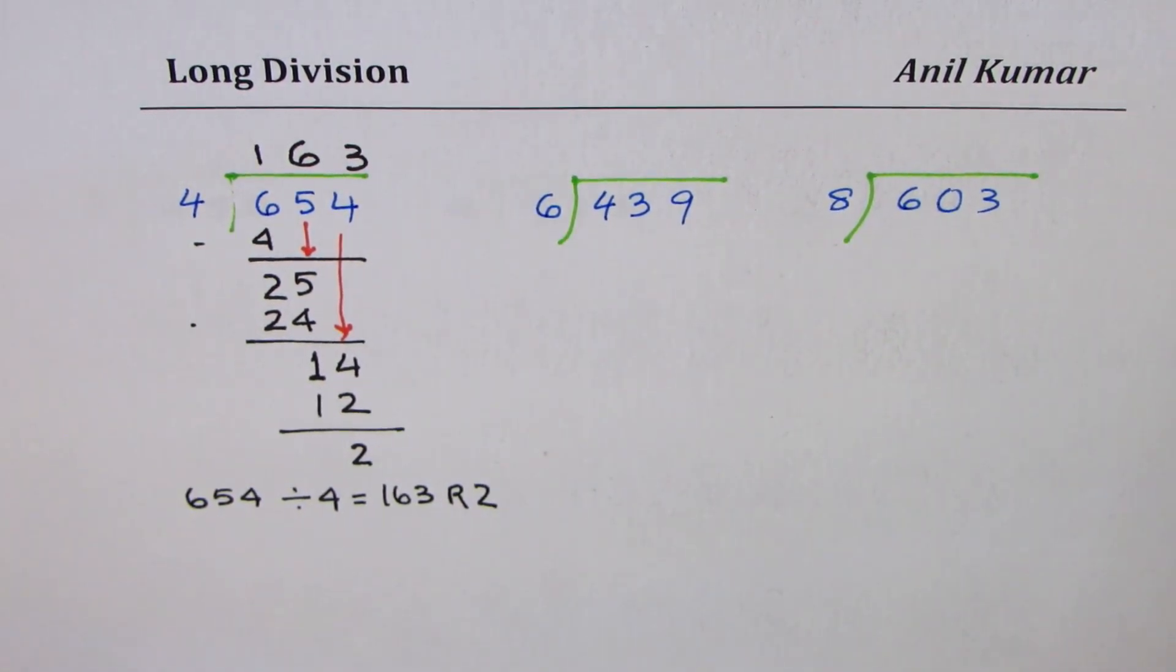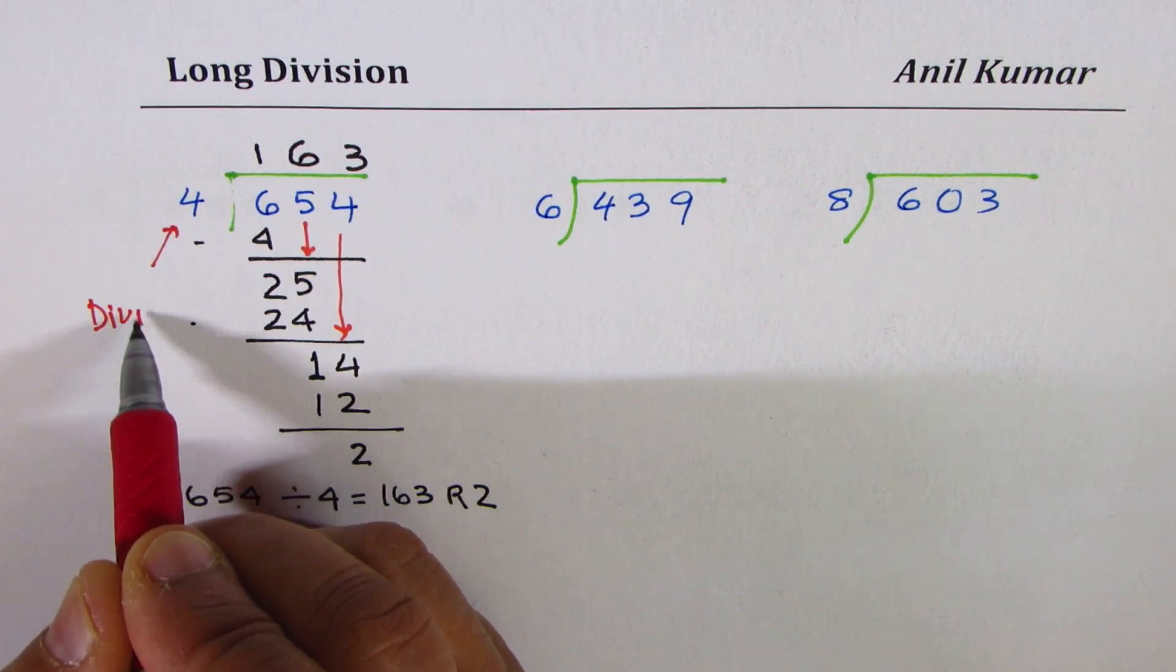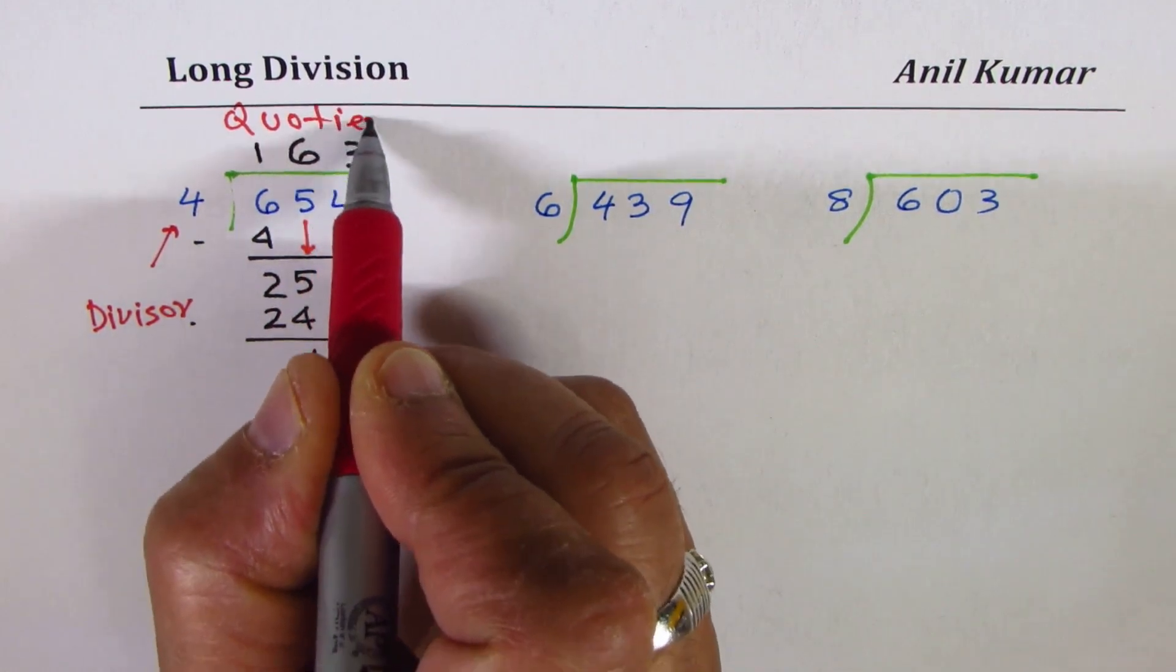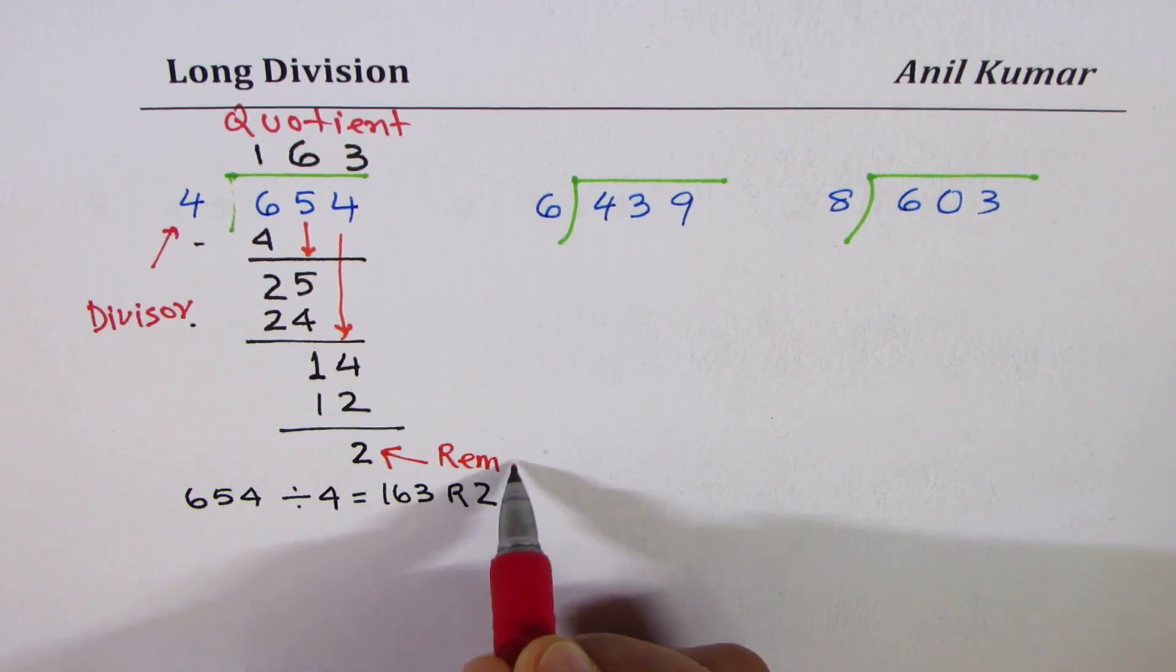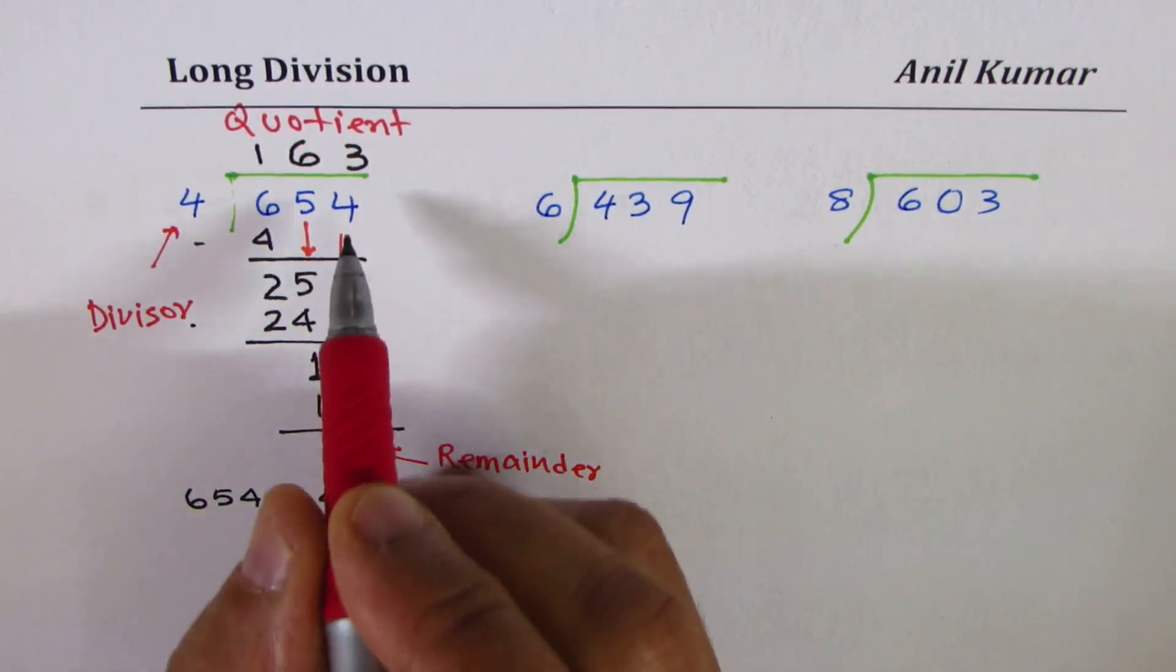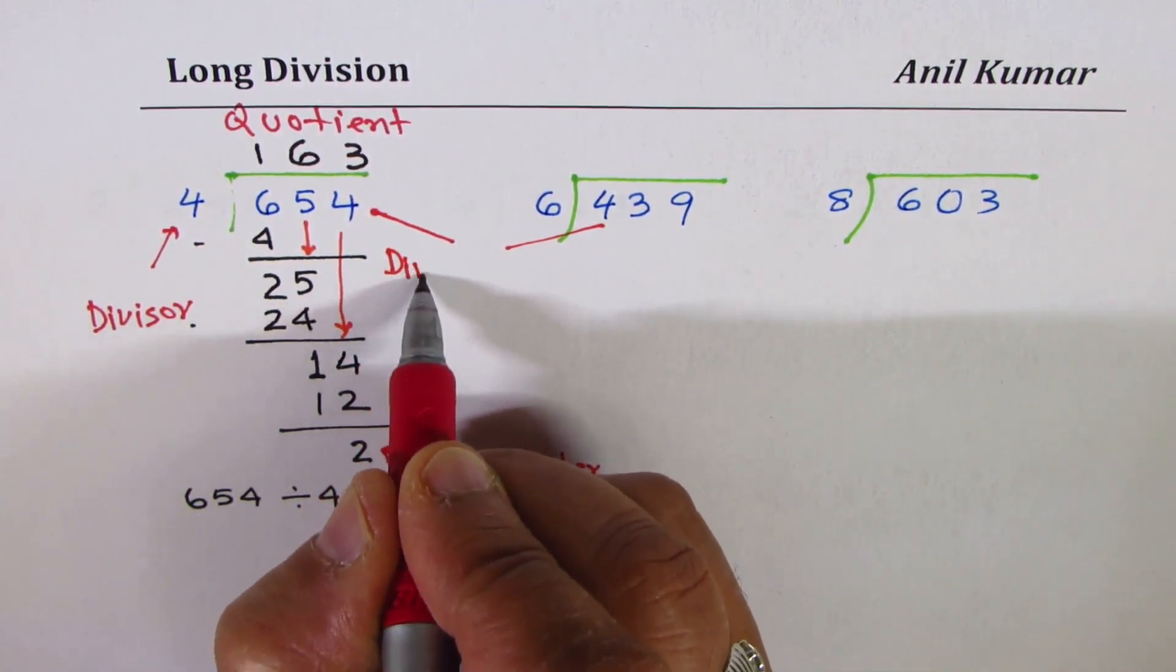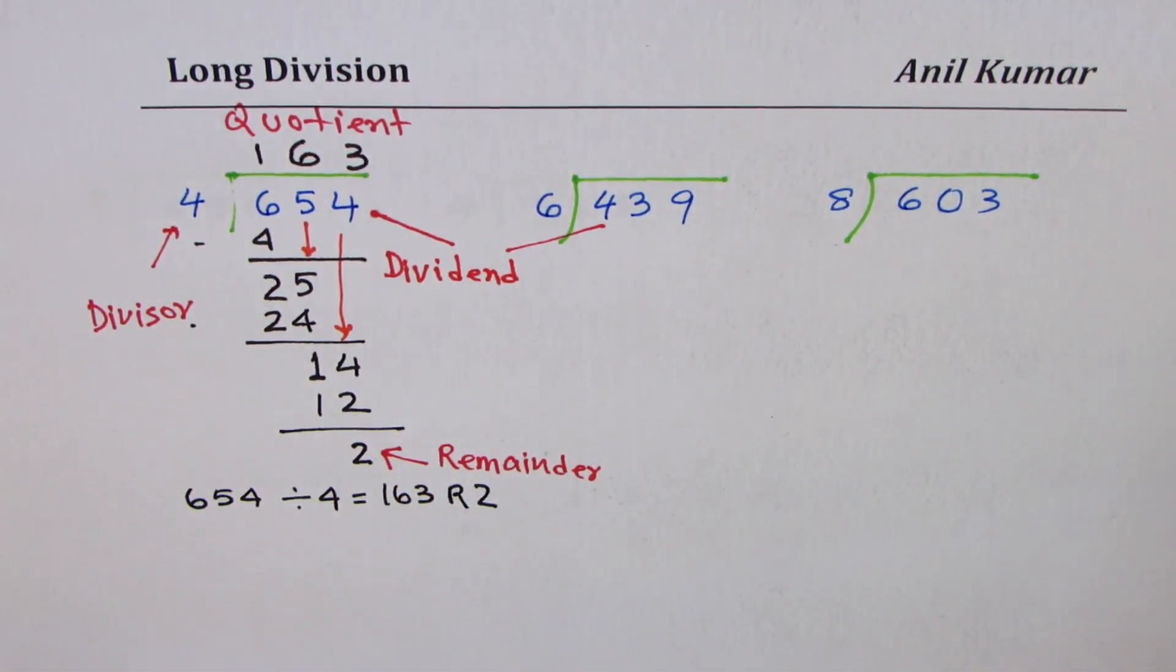In this particular example, there are some terms which you may like to remember. What we divide by is called divisor. What we get is quotient. This is the remainder. And what you divide is called dividend. These are technical names which we use to describe division.